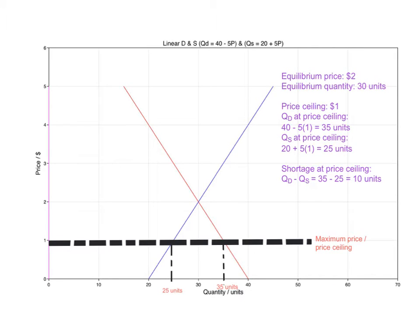Imagine a situation where you have a demand curve represented with QD equals 40 minus 5P and a supply curve represented with QS equals 20 plus 5P. Where these two curves intersect, the equilibrium point occurs with an equilibrium price of $2 and an equilibrium quantity of 30 units. This is the equilibrium price and the equilibrium quantity.